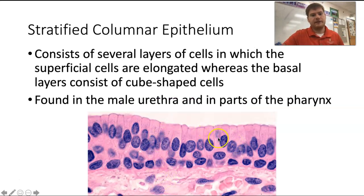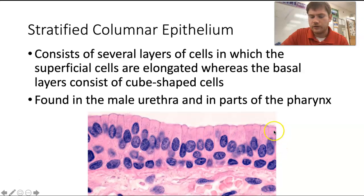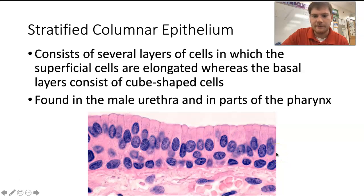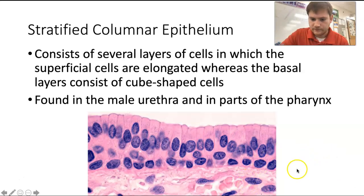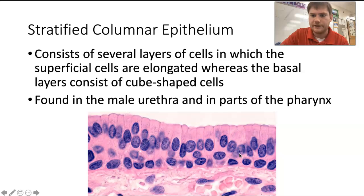Stratified columnar epithelium consists of usually two or three layers of cells in which the top ones are more columnar — long and elongated — while the bottom ones are more cuboidal. They are found in the male urethra and parts of the pharynx, which is in the back of your throat. The basement membrane is below the tissue, and everything beneath it is connective tissue.